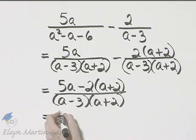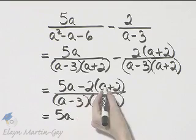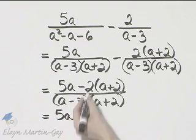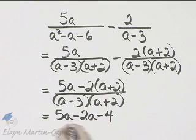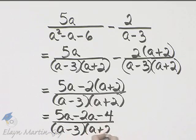So in the numerator I have five A. Now let's multiply negative two times A, negative two A I'll write as minus two A. And then negative two times two, negative four I'll write as minus four. All over that denominator, A minus three times A plus two.